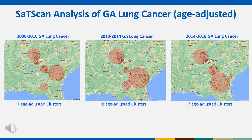We ran a similar analysis for the Georgia lung cancer. For these data, we had lung cancer outcomes for three time periods: 2006 to 2010, 2010 to 2014, and 2014 to 2018, as well as expected counts based on age-adjusted SIRs. Results from the age-adjusted cluster detection analysis show similar numbers of clusters and in some consistent areas over the three time periods.